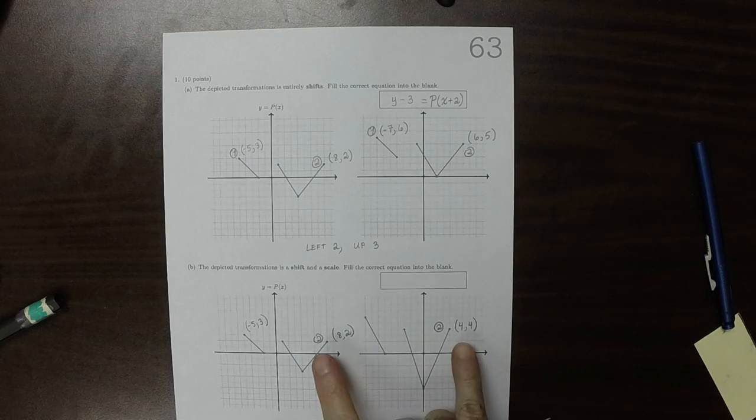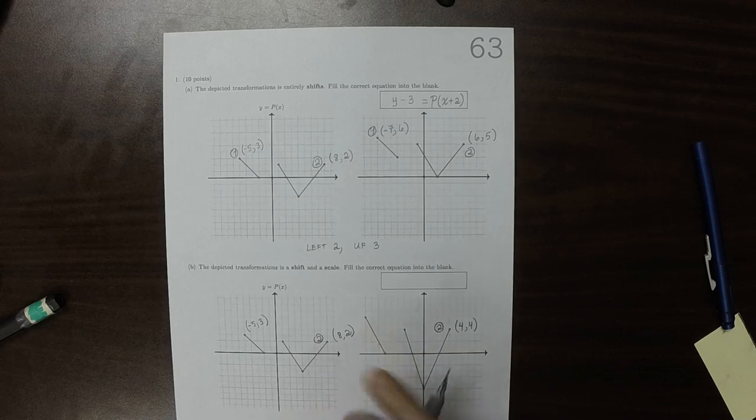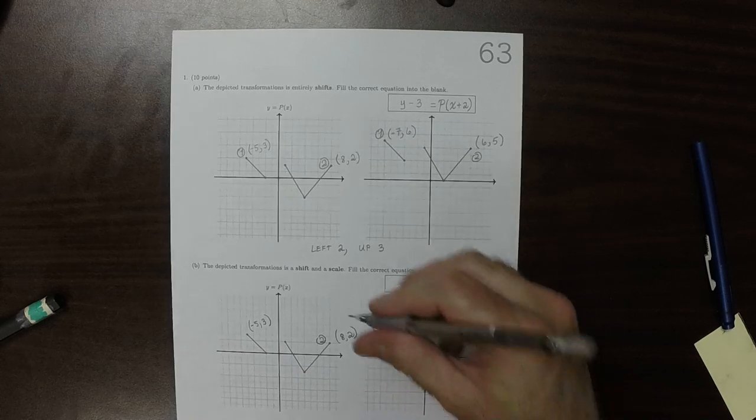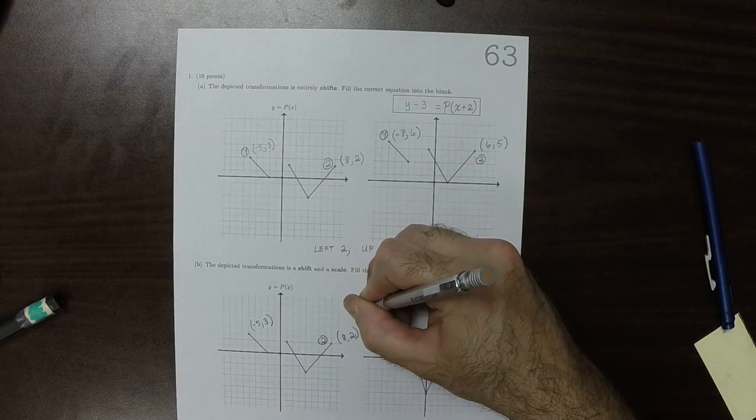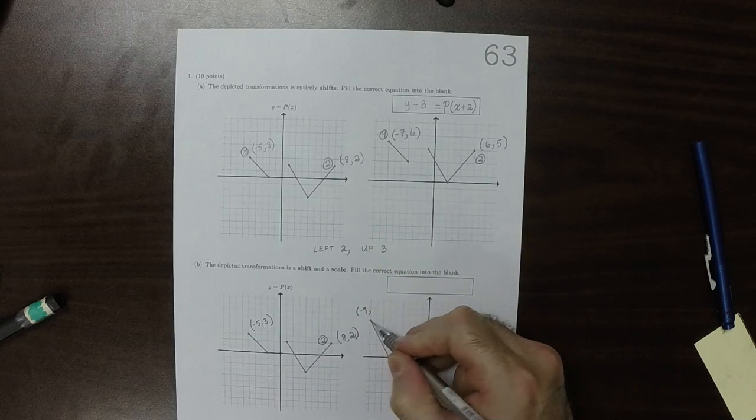So that's considering one point. Let's see if that agrees with this other point. So that's negative 9, and then 6.